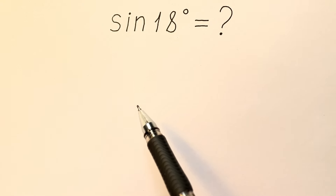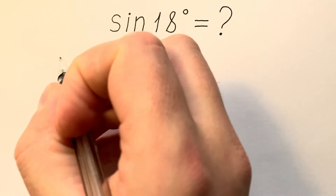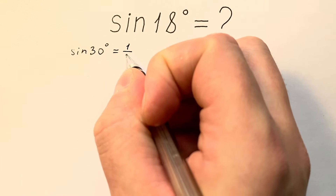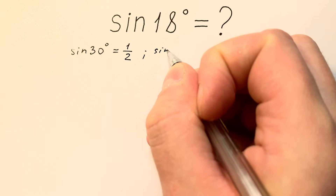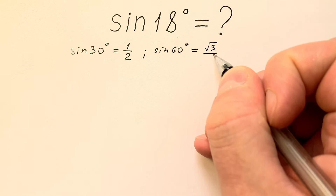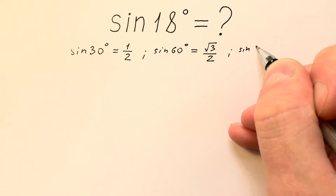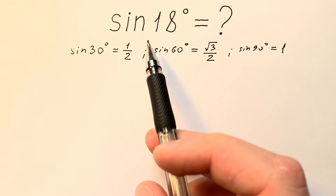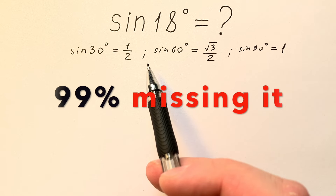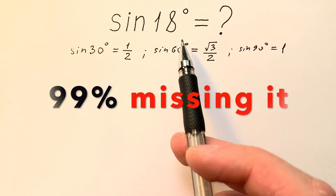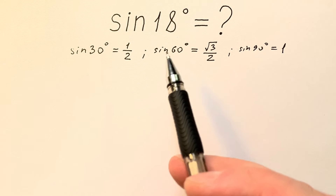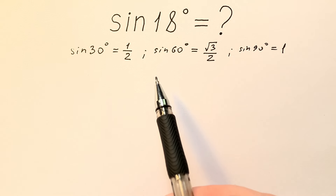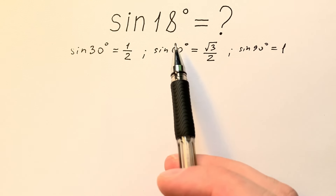Everybody knows table values of sines. For example, sine 30 degrees equals 1 divided by 2, sine 60 degrees equals square root of 3 divided by 2, and sine 90 degrees equals 1. But what is the value of sine 18 degrees? 99% miss this value because it's very rare and it appears only in some special trigonometry books. Some people even say that it's impossible to find it ourselves.